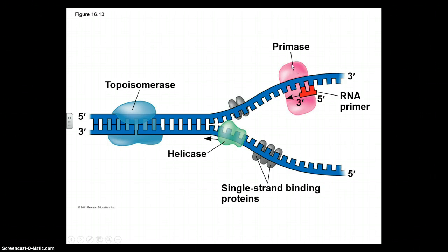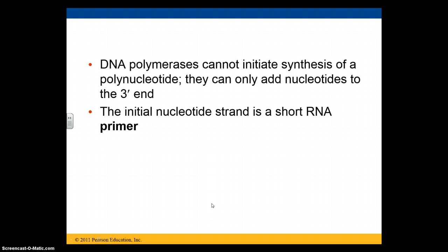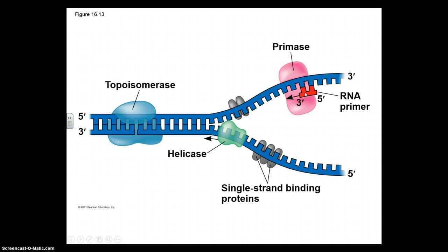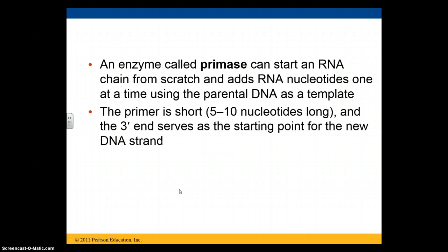There's also a primase here, which is an RNA primer enzyme that puts an RNA primer in from the 5' end to the 3' end — the direction in which DNA is going to be synthesized. DNA polymerases can't initiate the synthesis of a polynucleotide; they can only add nucleotides to the 3' end. So the initial nucleotide is the short RNA primer. Primase can start an RNA chain from scratch, adding RNA nucleotides one at a time using the parental DNA as a template. The primer is relatively short — maybe 5 to 10 nucleotides — and the 3' end serves as the starting point for the new DNA strand.